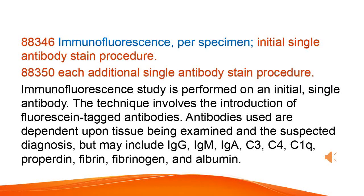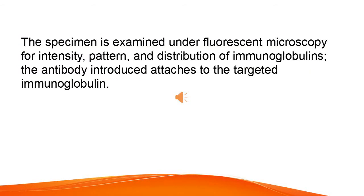Immunofluorescence, per specimen, initial single antibody stain procedure. Each additional single antibody stain procedure. The technique involves the introduction of fluorescent tagged antibodies. Antibodies used are dependent upon the tissue being examined and the suspected diagnosis, but may include IgG, IgM, IgA, C3, C4, C1Q, properdin, fibrin, fibrinogen, and albumin. The specimen is examined under fluorescent microscopy for intensity, pattern, and distribution of immunoglobulins. The antibody introduced attaches to the targeted immunoglobulin.